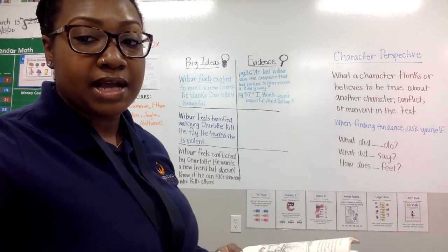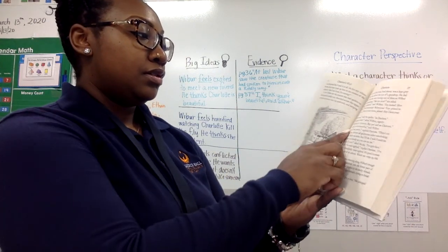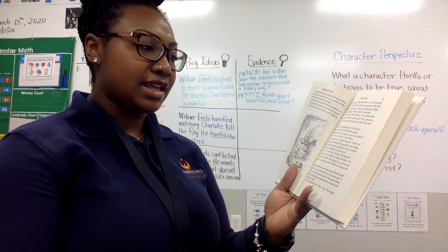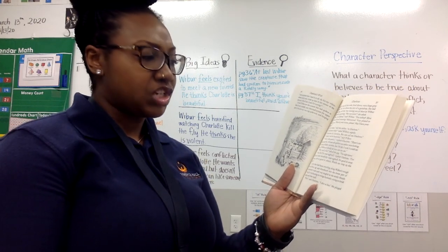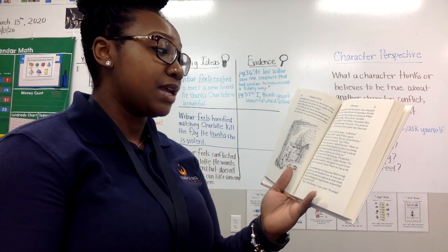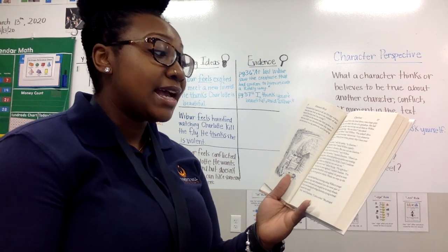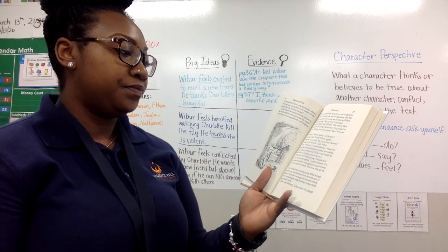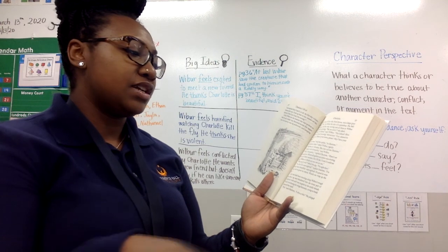Now we need to think about our next big idea, but let's keep reading first. 'Well, I am pretty,' replied Charlotte. 'There's no denying that. Almost all spiders are rather nice looking. I'm not as flashy as some, but I'll do. I wish I could see you, Wilbur, as clearly as you can see me.' 'Why can't you?' asked the pig. 'I'm right here.' 'Yes, but I'm slightly nearsighted,' replied Charlotte. 'I've always been dreadfully nearsighted. It's good in some ways, but not so good in others. Watch me wrap up this fly.'